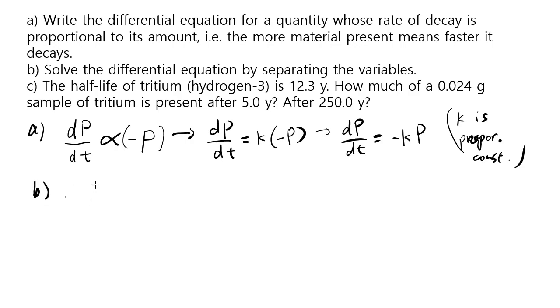And part b says solve the differential equation by separating the variables. What does that mean? Well, you can first multiply dt both sides, and you get negative kp times dt. And then you divide both sides by p, so that pp cancels, and what you get is dp over p equals to negative k dt. Now k is just a constant, it's not a variable. t and p are variables, and we like to see t as the independent variable and p as the dependent variable. That means we've successfully made t only appear on the right side, and p only appear on the left side, so we've separated the variables.